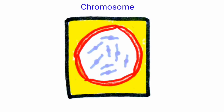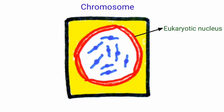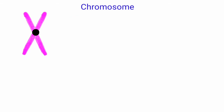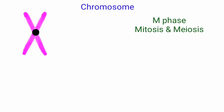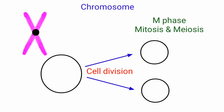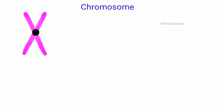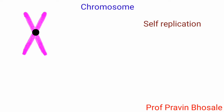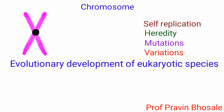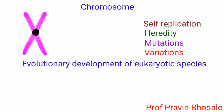Chromosomes are filamentous bodies present in the eukaryotic nucleus. Chromosomes are visible during M phase, that is during cell division. They are capable of self-replication and play a vital role in heredity, mutation, variation, and evolutionary development of eukaryotic species.